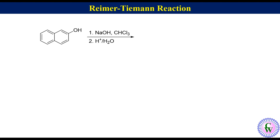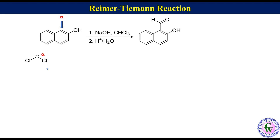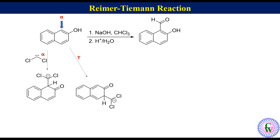Reimer-Tiemann reaction of beta-naphthol. In this molecule there are two unsubstituted ortho positions, alpha and gamma. But formylation selectively occurs at the alpha position to produce 2-hydroxy-1-naphthaldehyde. The reason for this regioselectivity is that alpha attack leads to an intermediate that retains one aromatic ring, while gamma attack leads to an intermediate showing loss of aromaticity of both rings.